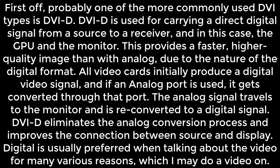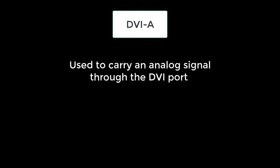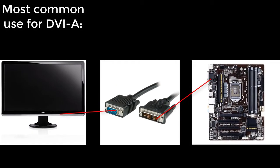DVI-D eliminates the analog conversion process and improves the connection between source and display. Digital is usually preferred when talking about video for various reasons. The second type of DVI, DVI-A, is used to carry an analog signal through the DVI port. The most common use of DVI-A is connecting to a VGA device, since DVI-A and VGA carry the same signal. There is some loss of quality involved in digital-to-analog conversion, which is why a digital signal is recommended whenever possible.